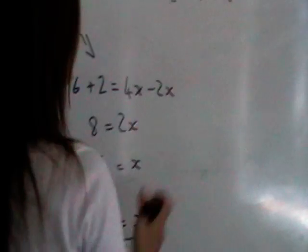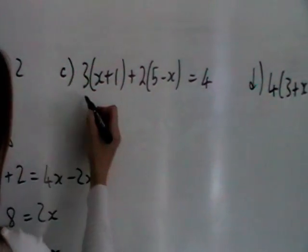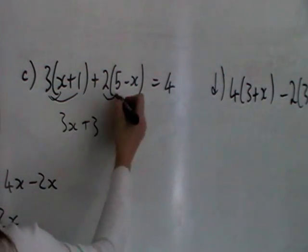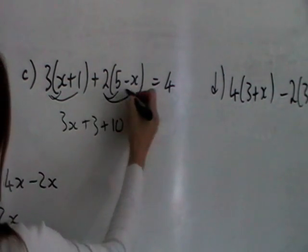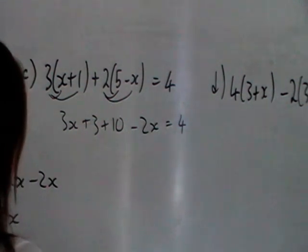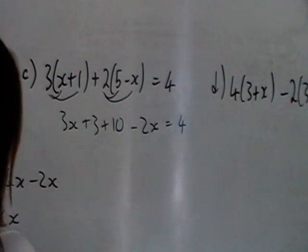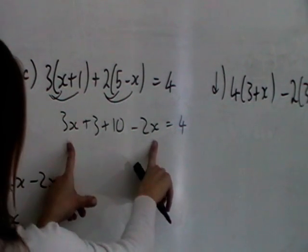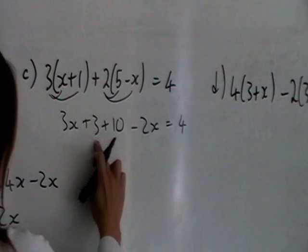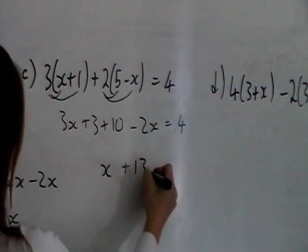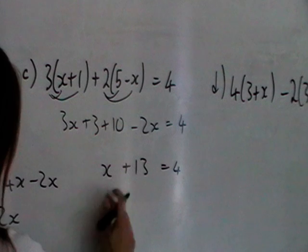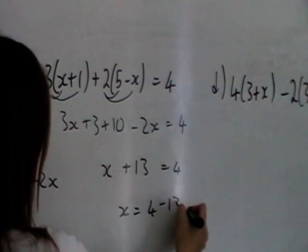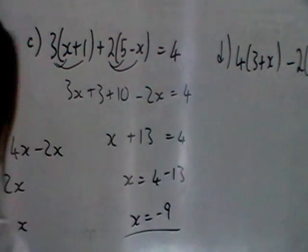Moving on to Part C, we need to multiply our brackets out first. So we're going to have 3x plus 3 plus 10 minus 2x equals 4. Let's collect our terms together — collect our x's: 3x minus 2x gives us 1x. 3 plus 10 gives us 13, equal to 4. Then to get x on its own, we take the 13 over and subtract it, so we get x is minus 9.